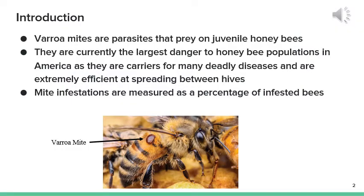Viral mites are a parasitic mite that prey on juvenile honeybees. They're currently the largest danger to honeybee populations in America as they're carriers of many deadly diseases and are extremely efficient at spreading between hives. They fly out on worker bees and transfer from one bee to another that may fly back to a different hive. Mite infestations are measured as a percentage of infested bees within a colony.